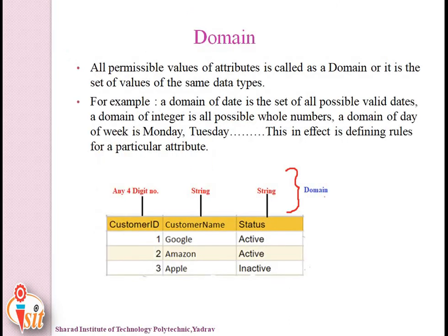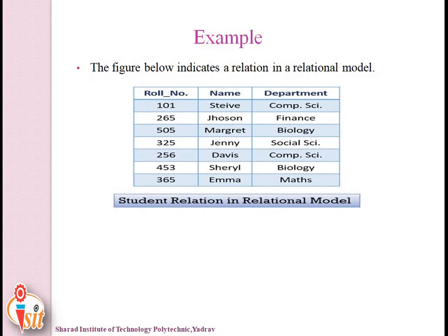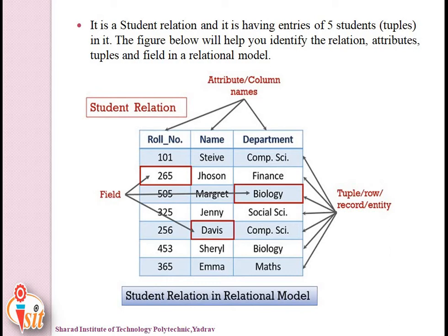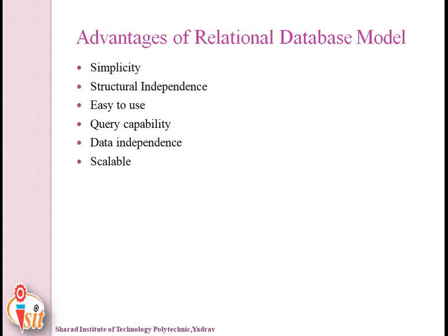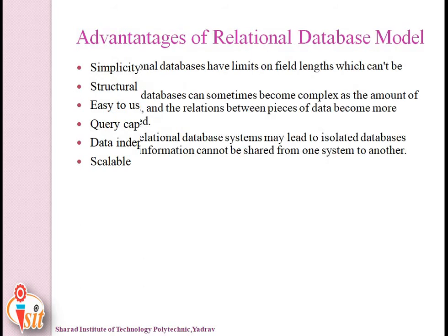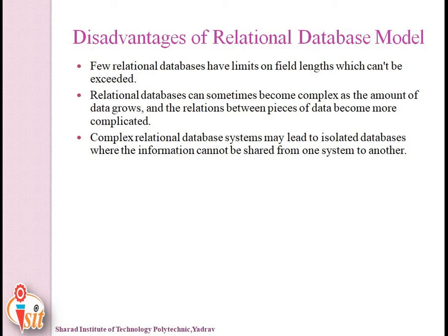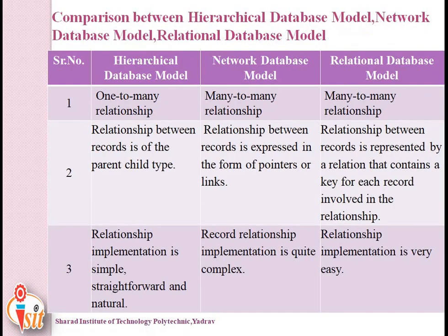Domain is the set of all permissible values of an attribute, i.e., values of the same data type. For example, customer ID is any 4-digit number, customer name is a string, and status is a string. Advantages of the relational database model include simplicity, structural independence, ease of use, query capability, data independence, and scalability. Disadvantages include that it can sometimes become complex and may lead to isolated databases where information cannot be shared between systems.